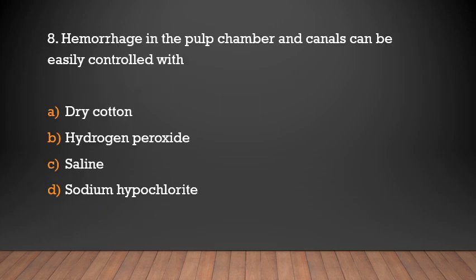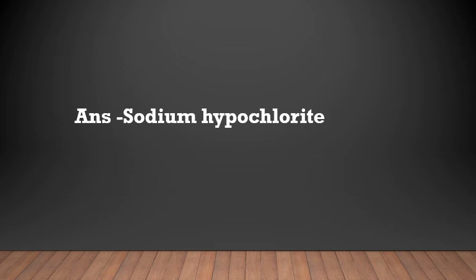Hemorrhage in the pulp chamber and canals can be easily controlled with — options: dry cotton, hydrogen peroxide, saline, sodium hypochlorite. Answer: Sodium hypochlorite.